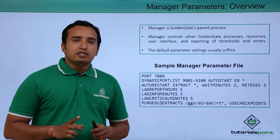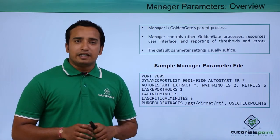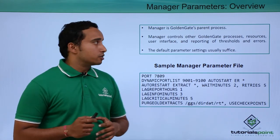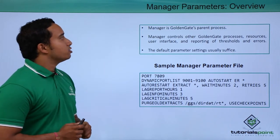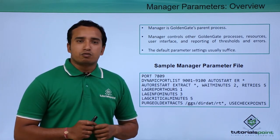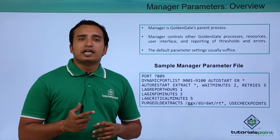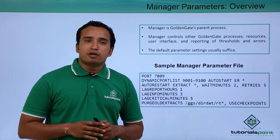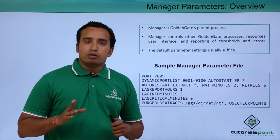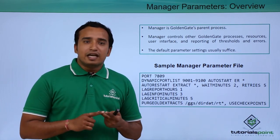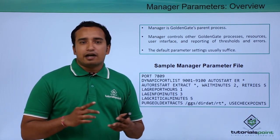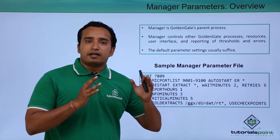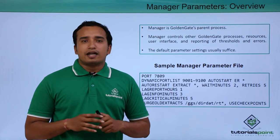Once the global parameters are set, you do not change them because they are common to all the processes. Now we will see the overview of the manager process and the different parameters set for it. The manager process controls the remaining processes like extract, replicat, collector, and data pump processes. It is an important process that runs on both the source and target side.